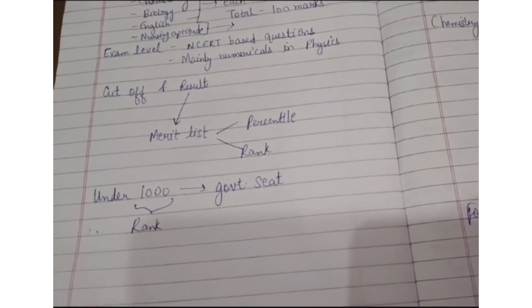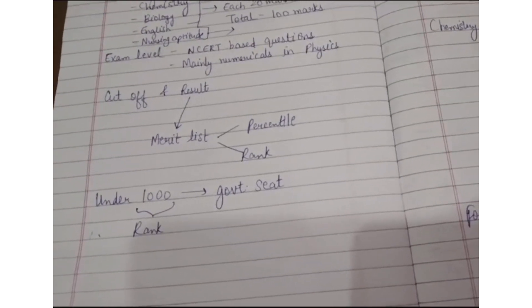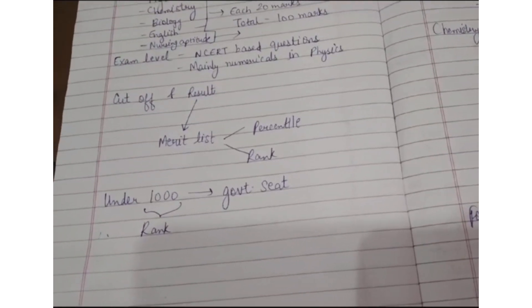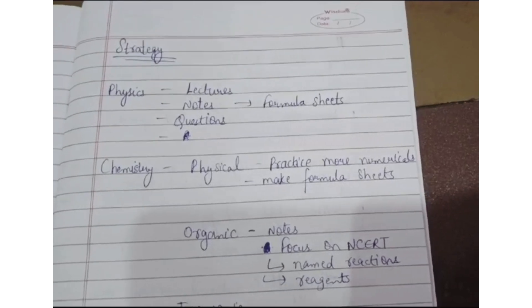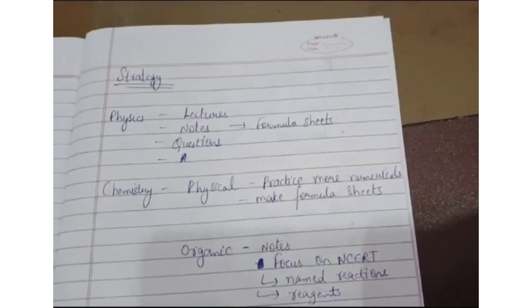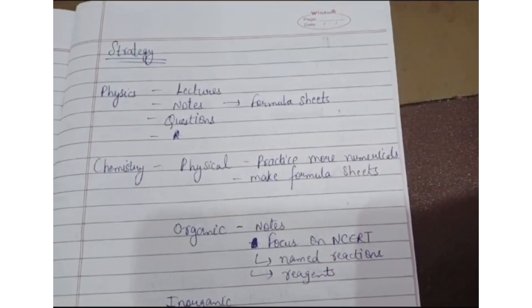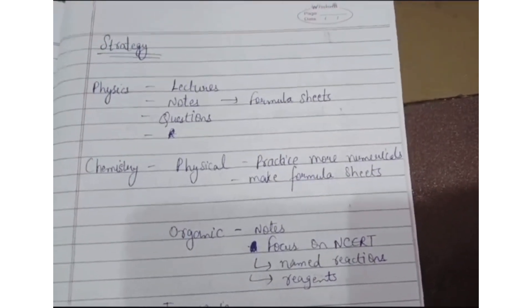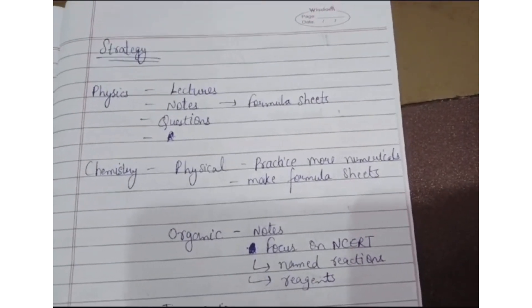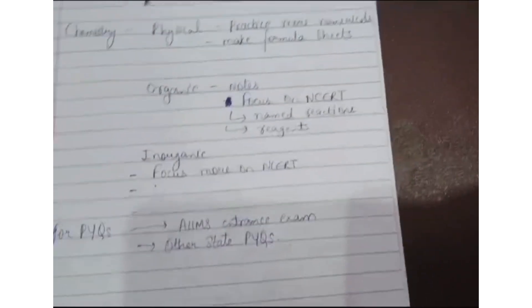We can say that if your rank is under 1000, then you are on the safer side for getting a government seat. When I talk about the strategy for Physics, you should first watch the chapter's lecture, then make the notes, revise the notes again and again, make the formula sheets, and then practice questions.